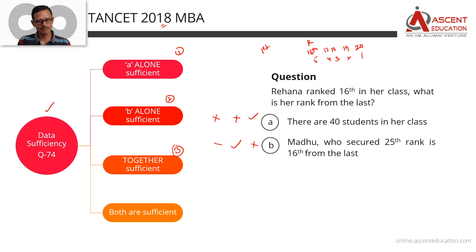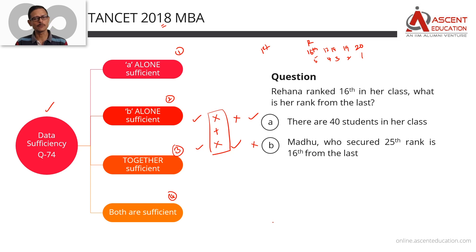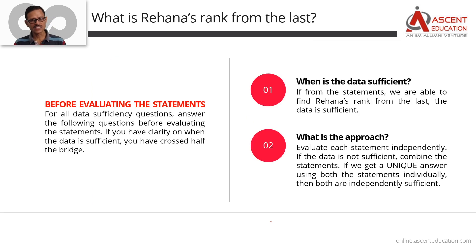Answer option 4: if each statement is independently sufficient — A alone is sufficient and B alone is also sufficient. The core question is: what is Rahana's rank from the last? If the last class rank comes out to be a single unique number, then the data is sufficient.